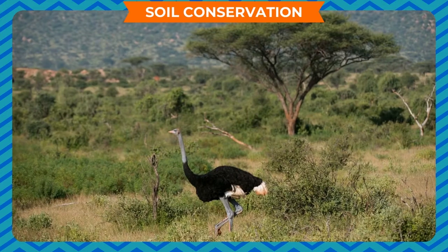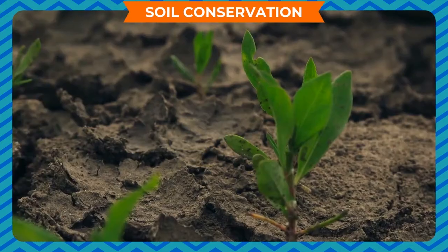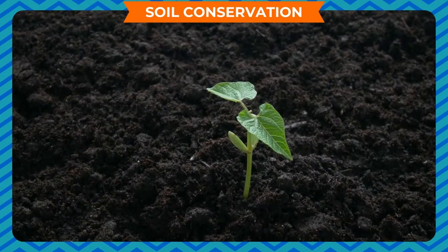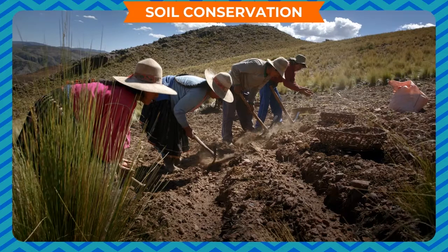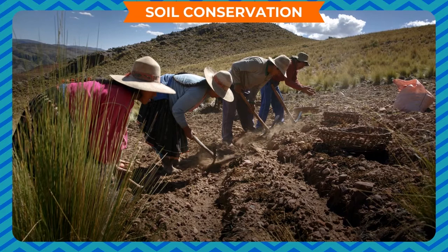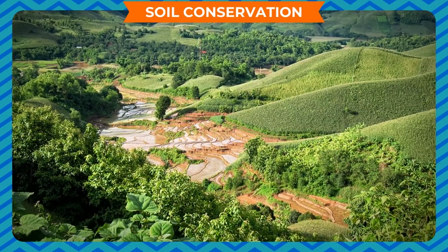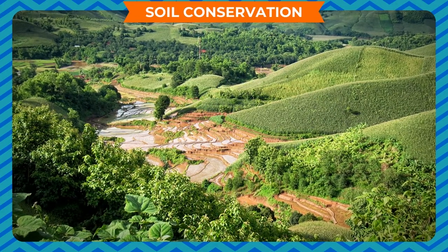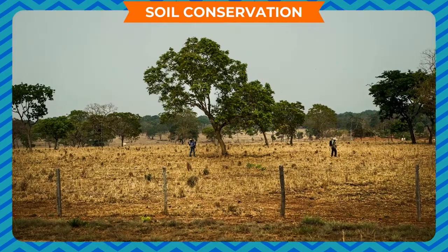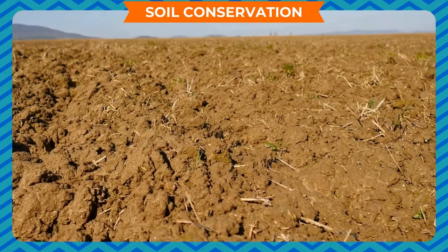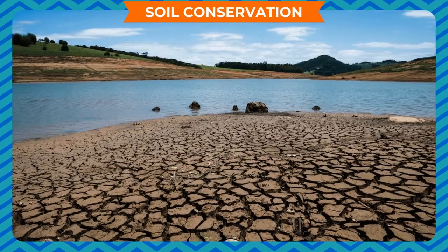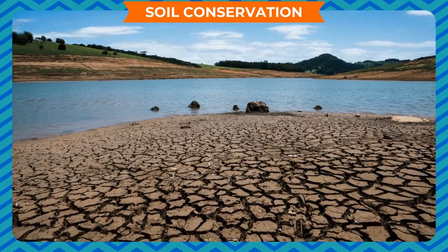Soil is the foundation of all life — human beings, plants, and animals on earth. Our survival is not possible without it. The preservation and protection of soil against erosion is called soil conservation. Nature took millions of years to form the soil, but carelessness can erode it very quickly. Soil erosion makes the land infertile and useless for farming.